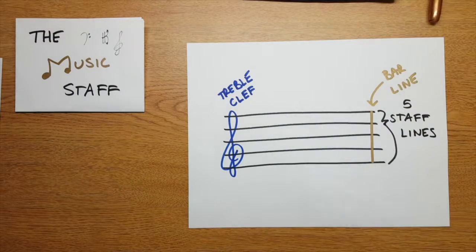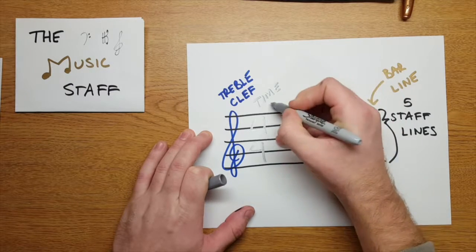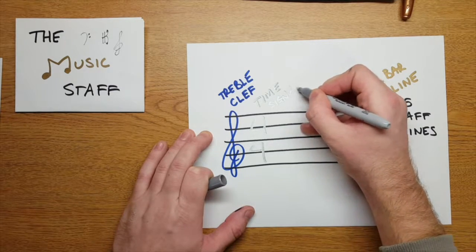Next, you'll draw the time signature, four over four. It tells us how many beats are in our measure and what rhythm gets the beat. More on that later.